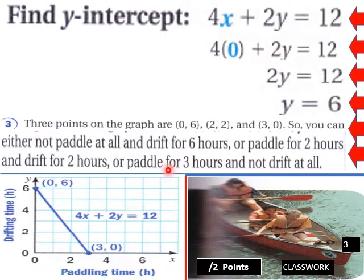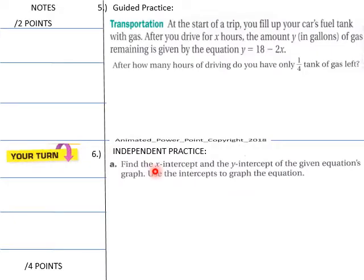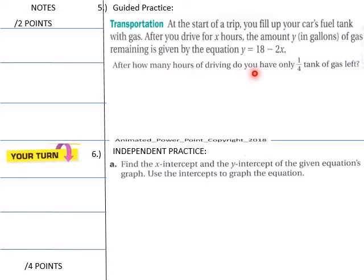Knowing that, let's go into the guided practice. At the start of a trip you fill up your car's fuel tank with gas. After you drive for x hours, the amount y in gallons of gas remaining is given by the equation y equals 18 minus 2x. After how many hours of driving do you have only one quarter of a tank of gas left?